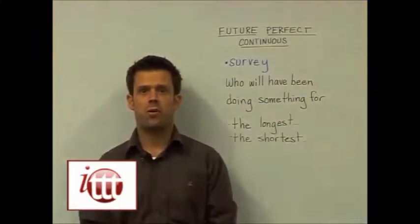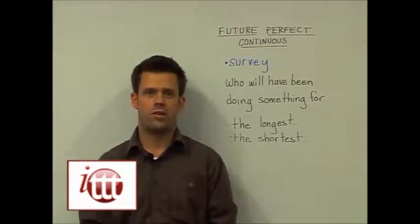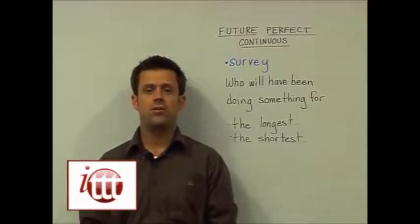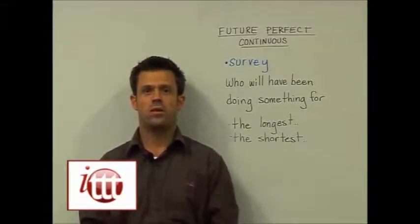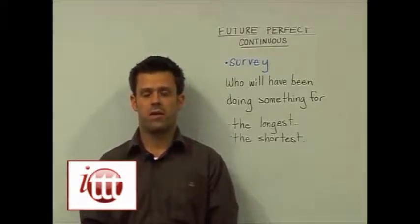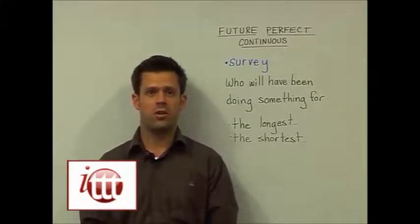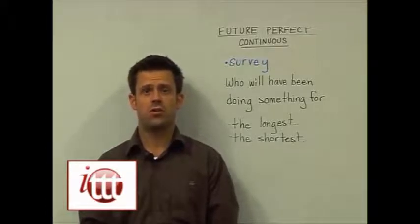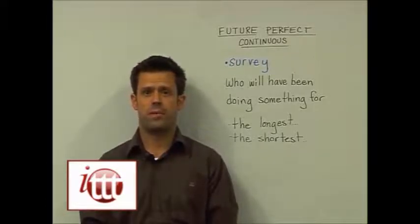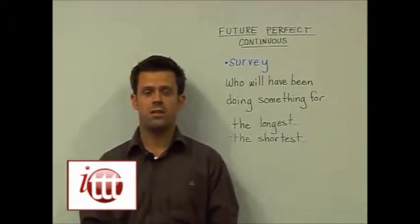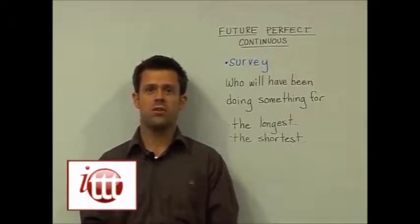A teaching idea for the future perfect continuous tense includes a survey — we want to find out the duration of an activity at a certain future point in time. A sample question might be: 'How long will you have been learning English for by the end of the year?' At the end of the activity, we should identify who will have been learning English for the longest and who for the shortest amount of time. Bear in mind that the future perfect continuous is one of those rare tenses we don't often use, which limits the range of activities we can use with our students.